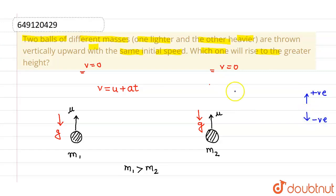So here also we will be applying the same equation v equals to u plus at. Now since the acceleration is minus g and velocity is zero, so zero equals to u minus gt. Now here also velocity is zero.